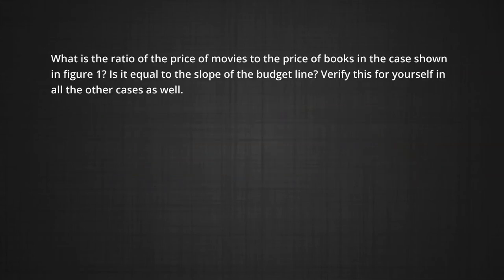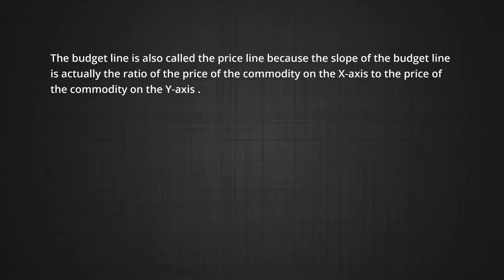What is the ratio of the price of movie tickets to the price of books in Figure 1? Is it equal to the slope of the budget line? Verify this for yourself in all the other cases as well. The budget line is called a price line because the slope of the budget line is the ratio of the price of the commodity on the X axis to the price of the commodity on the Y axis.